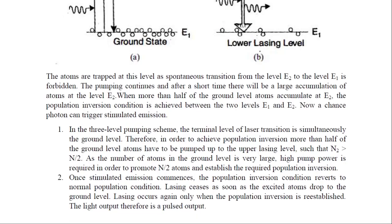In the three-level pumping scheme, the terminal level of laser transition is simultaneously the ground energy level E1. Therefore, in order to achieve population inversion, more than half of the ground level atoms have to be pumped up to the upper lasing level such that N2 should be greater than N divided by 2, where N is the population density of ground level E1 and N2 is the population density of metastable state E2. As the number of atoms in the ground level is very large, high pump power is required to promote N/2 atoms and establish the required population inversion.